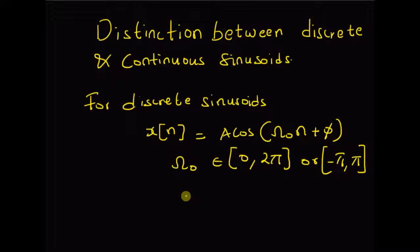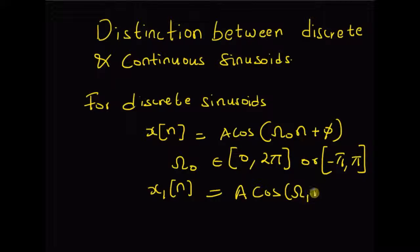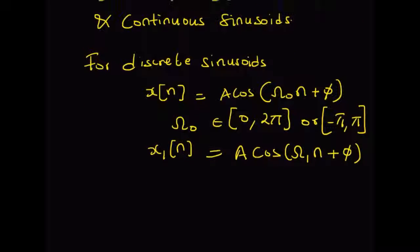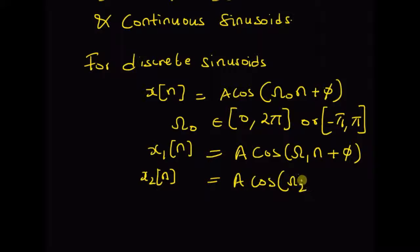Now consider a signal x1 of n, that is, a sequence x1 of n defined as A times cos of omega 1 n plus phi. And consider a second sequence x2 of n equal to A times cos of omega 2 n plus phi. That is, two sequences with the same phase.